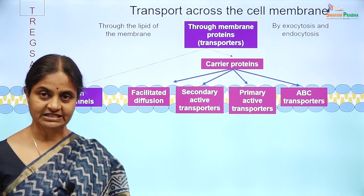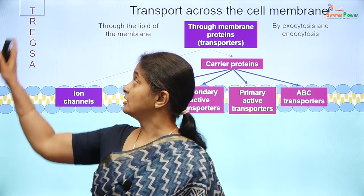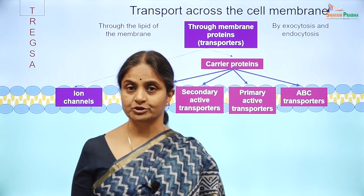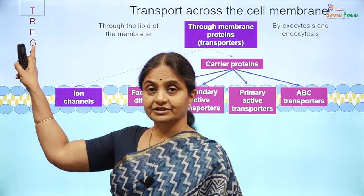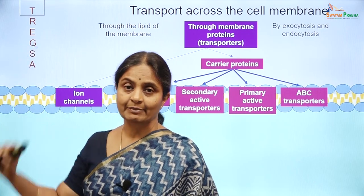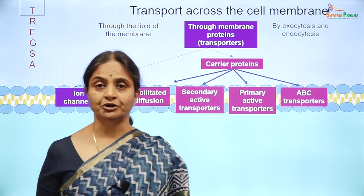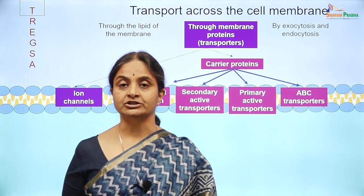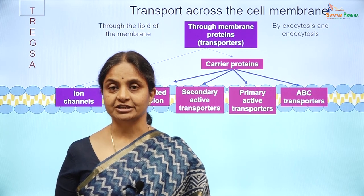We are coming to the end of the session now. We have considered some details of the transporters on the cell membrane. Our next consideration will be the R, E, and G of TREXA — the receptors, enzymes, and G proteins on the cell membrane. These three proteins will be considered in the next module, which we call cell signaling mechanisms or second messenger signaling mechanisms. Thank you for watching the Swayam Prabha lecture.